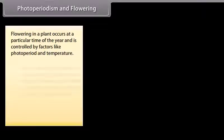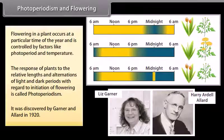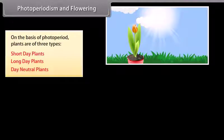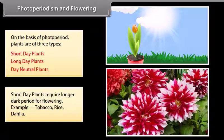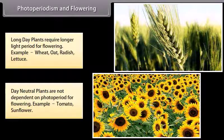The response of plants to the relative lengths and alternations of light and dark periods with regard to initiation of flowering is called photoperiodism. It was discovered by Garner and Allard in 1920. On the basis of photoperiod, plants are of three types: short day plants, which require a longer dark period for flowering (e.g., tobacco, rice, dahlia); long day plants, which require a longer light period for flowering (e.g., wheat, oat, radish, lettuce); and day-neutral plants, which are not dependent on photoperiod for flowering (e.g., tomato, sunflower).